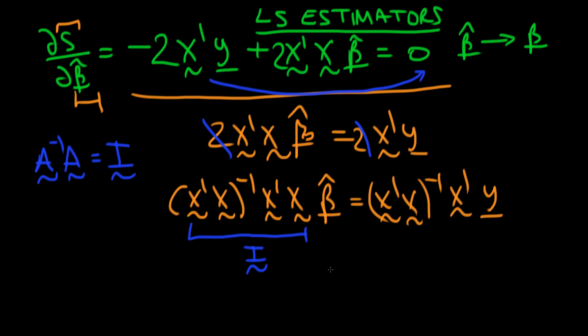So in fact we've got a form for our least squared estimators in matrix form. It's just equal to (X'X)^-1 times X'Y.